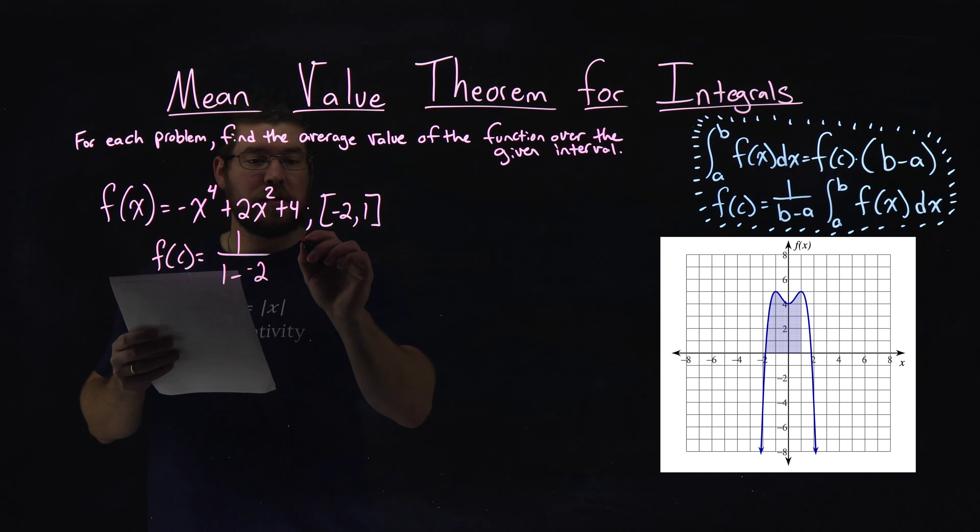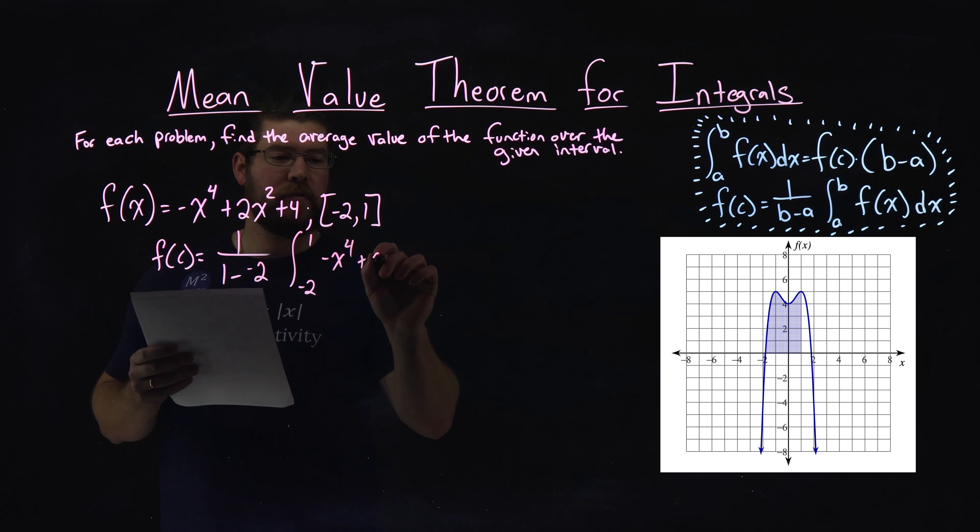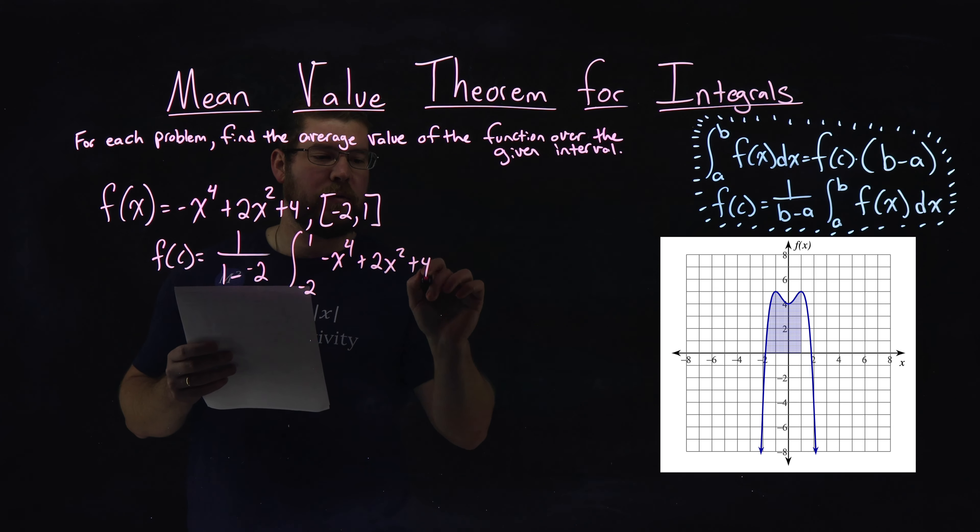Then we multiply that by the integral here from negative 2 to 1 of our function, negative x to the fourth plus 2x squared plus 4 dx.